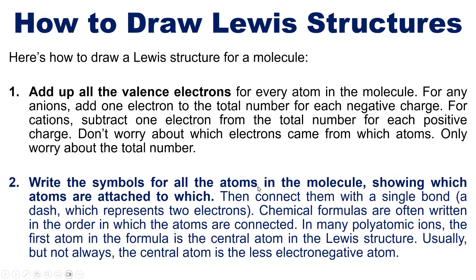Two, you write the symbols for all the atoms in the molecule, showing which atoms are attached to which. Then connect them with a single bond that is a dash, which represents two shared electrons. Chemical formulas are often written in the order in which the atoms are connected. In many polyatomic ions, the first atom in the formula is the central atom in the Lewis structure. Usually, but not always, the central atom is the less electronegative atom. In other words, I usually grab the formula and I put the leftmost element in the formula in the middle, unless it's hydrogen, because hydrogen can only form one bond and thus cannot be in the middle of a bunch of other atoms or groups.